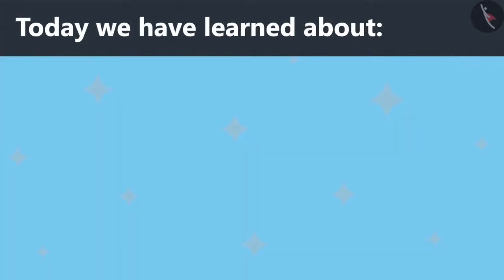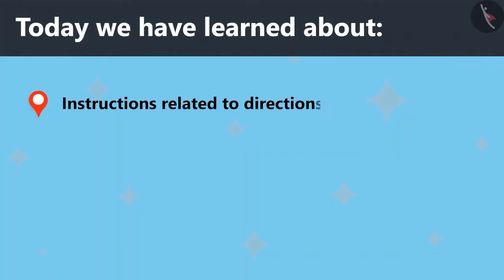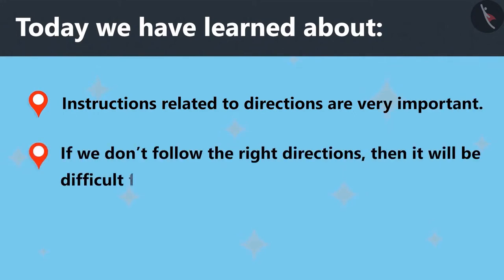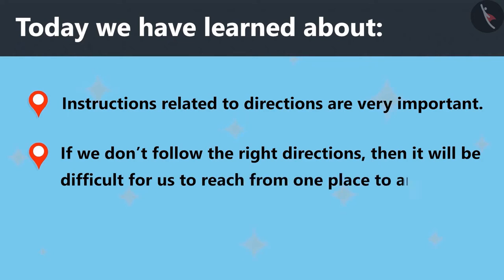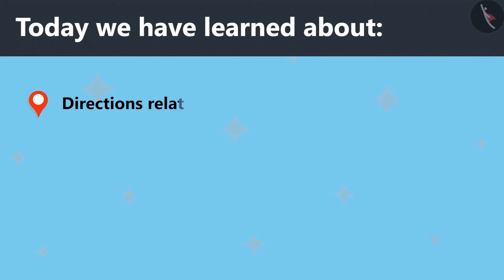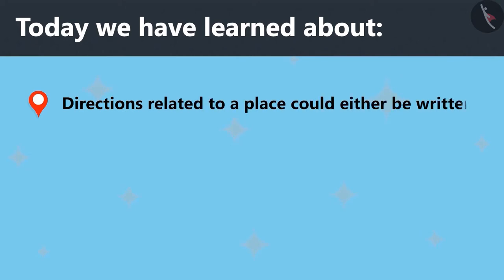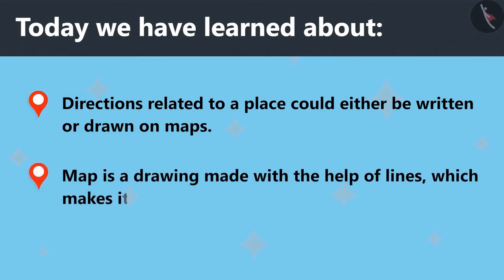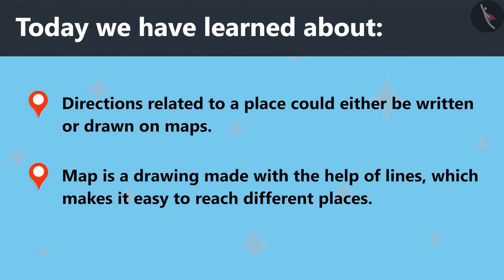Today we have learned that instructions related to directions are very important. If we don't follow the right directions, it will be difficult for us to reach from one place to another. Directions related to a place could either be written or drawn on maps. A map is a drawing made with the help of lines which makes it easy to reach different places.